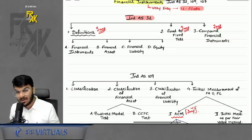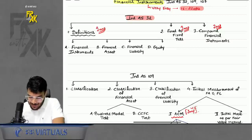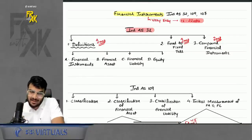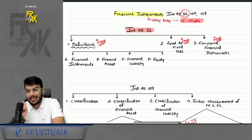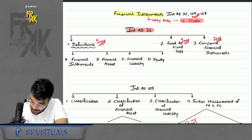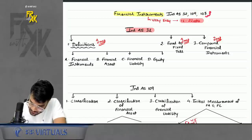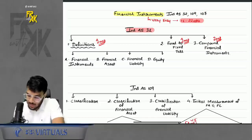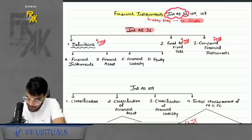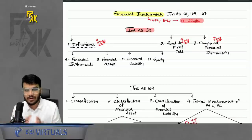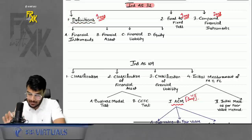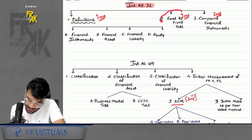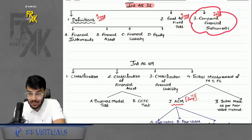Let's start the revision. In financial instruments, there are three indices: IND AS 32, IND AS 109, and IND AS 107. IND AS 32 covers definitions, IND AS 109 covers the accounting part, and IND AS 107 covers disclosures. The most important index is 109, but we will cover all three. Under IND AS 32, we focus on three aspects: the definition, the fixed-to-fixed test, and compound financial instruments.